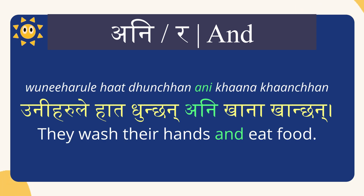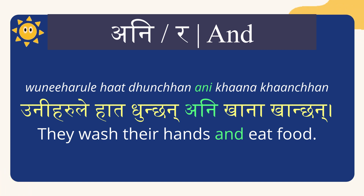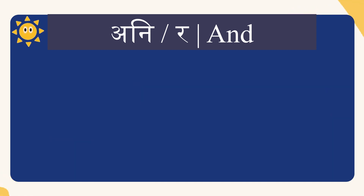Uniharule haat dhuncha ani khana khancha — they wash their hands and eat food. Now let's do for ra, which also means 'and'. You can use either ani or ra.